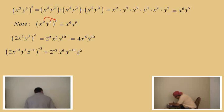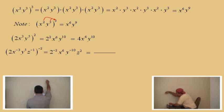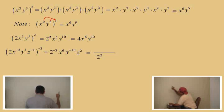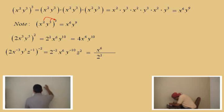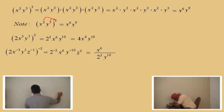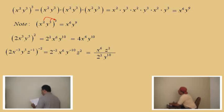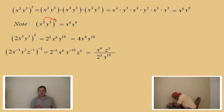Now we're back to dealing with negative exponents. We're going to move things around and have a rational expression as our answer. Two to the negative two — we move it to the bottom, and it becomes two squared. The x to the sixth stays on top — no need to move that. Y to the negative ten goes to the bottom as y to the tenth. And z squared — do we need to move that? Nope, leave it right there. To be proper, we write two squared as four. So our final answer is x to the sixth times z squared over four y to the tenth.